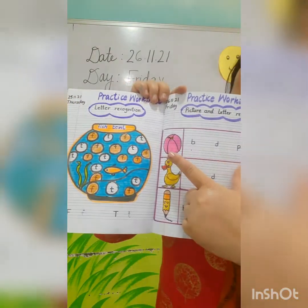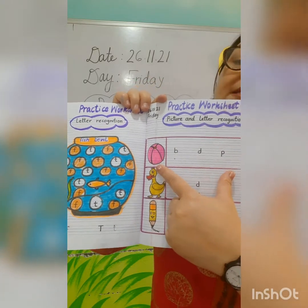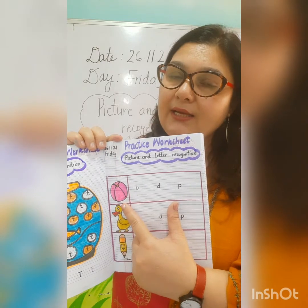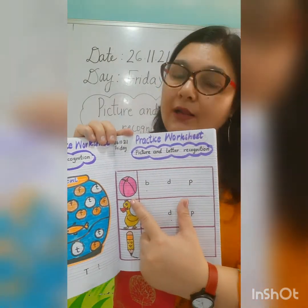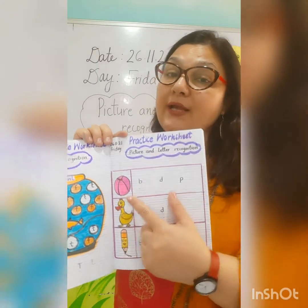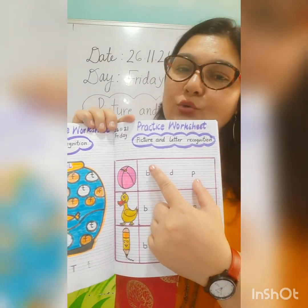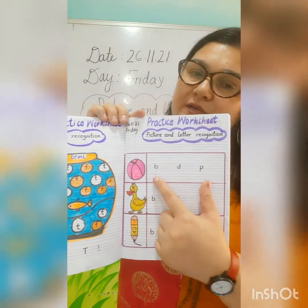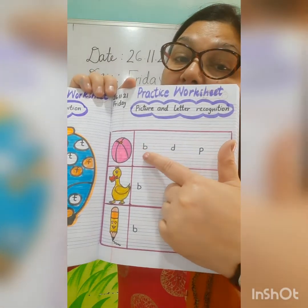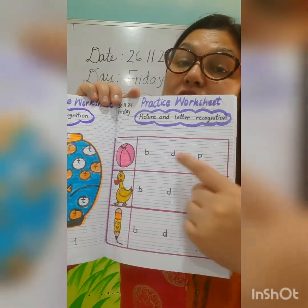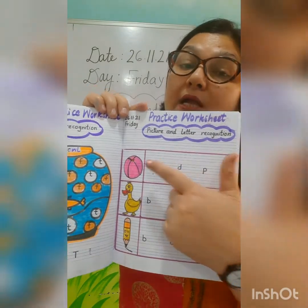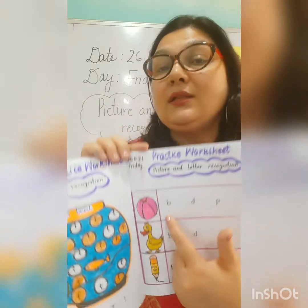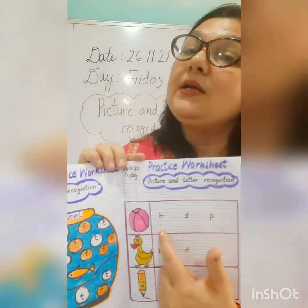So let's see the picture. What is this children? This is a ball. What is the initial sound? The initial sound is B. Right children? So you have to circle the letter B. Remember who is a letter, and then you have to find this letter — letter B.